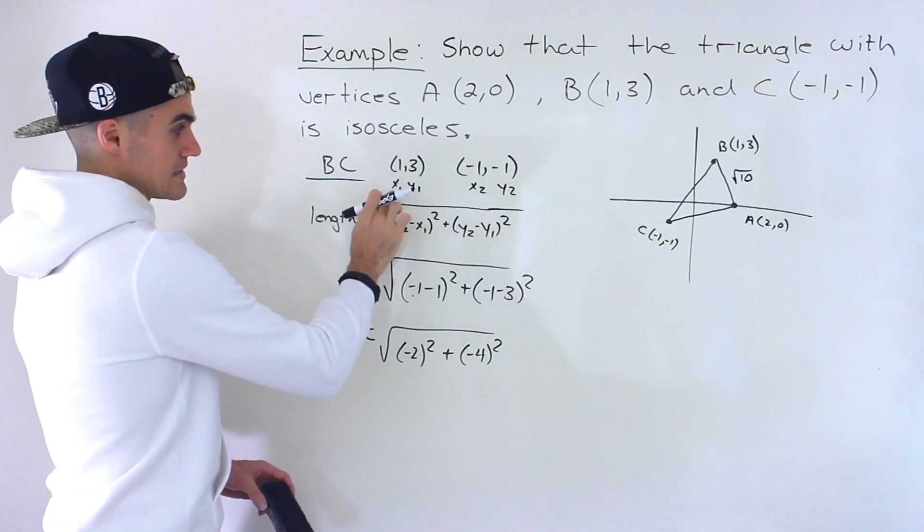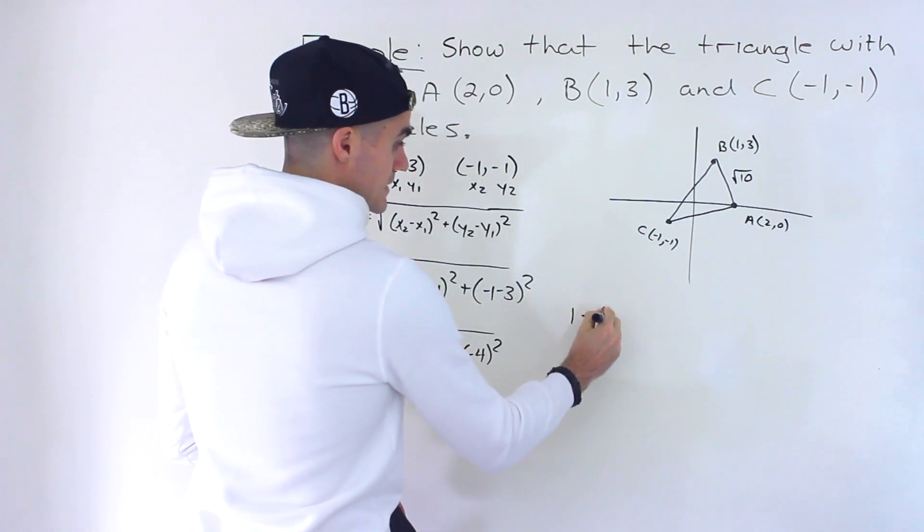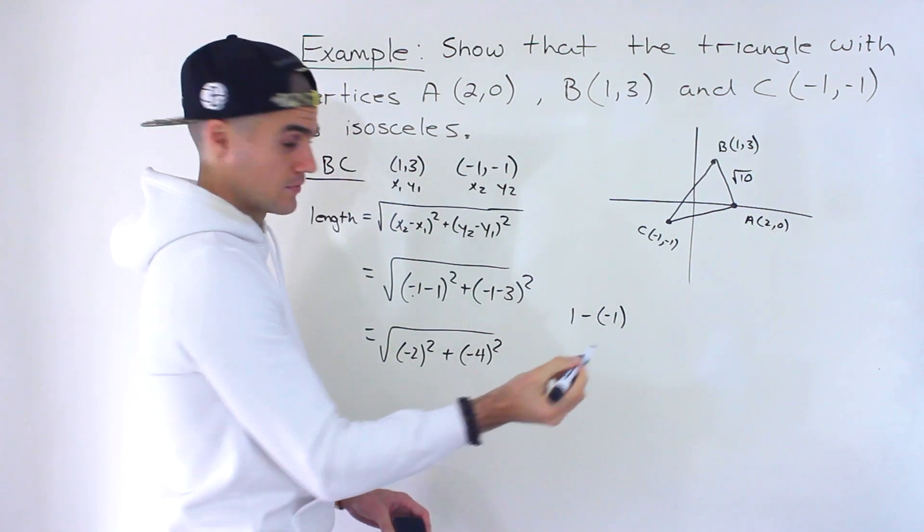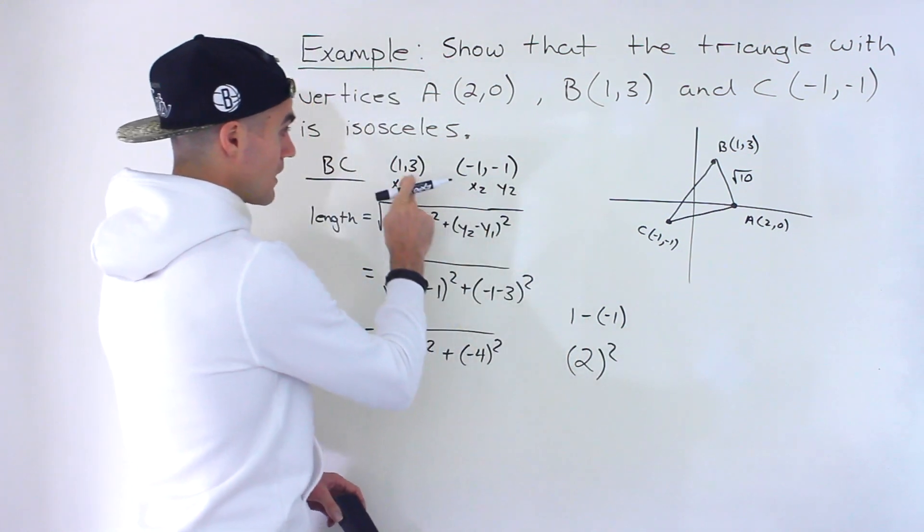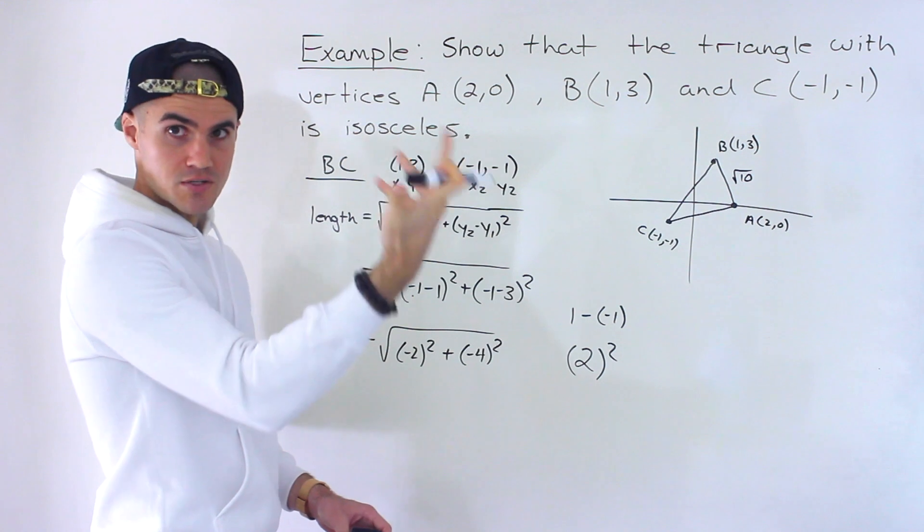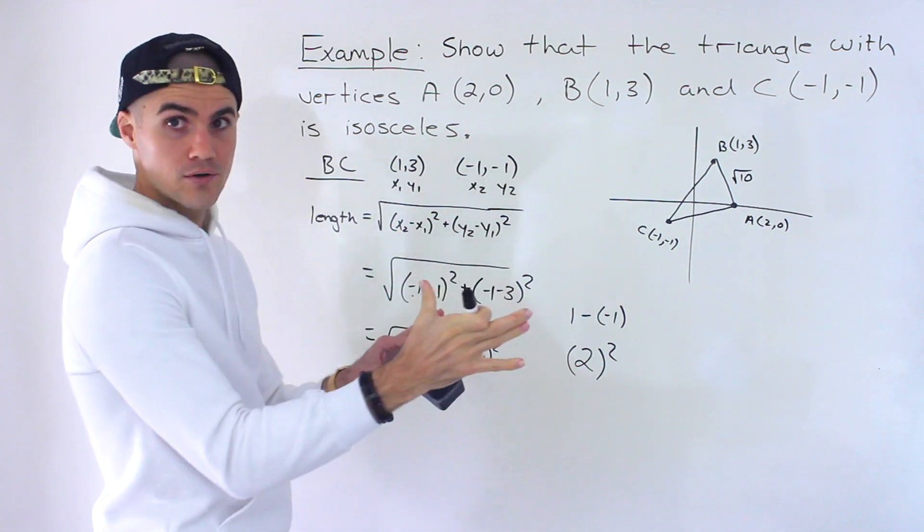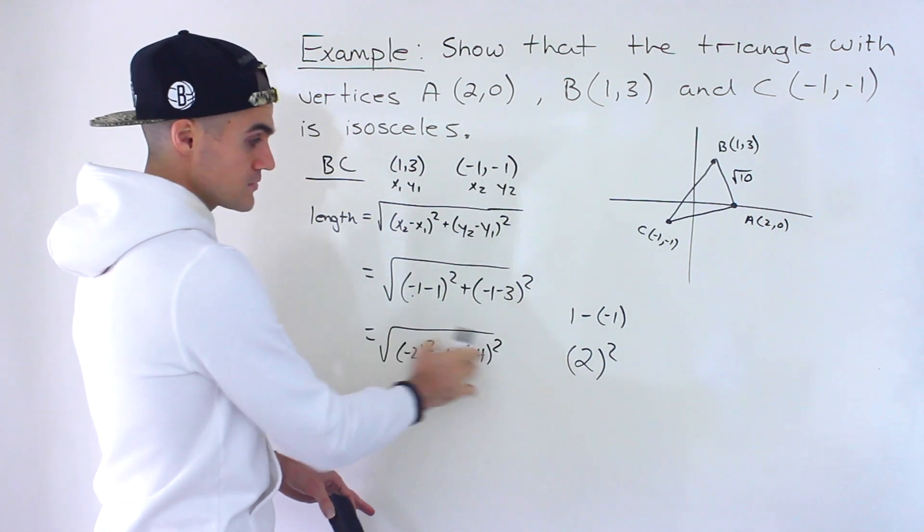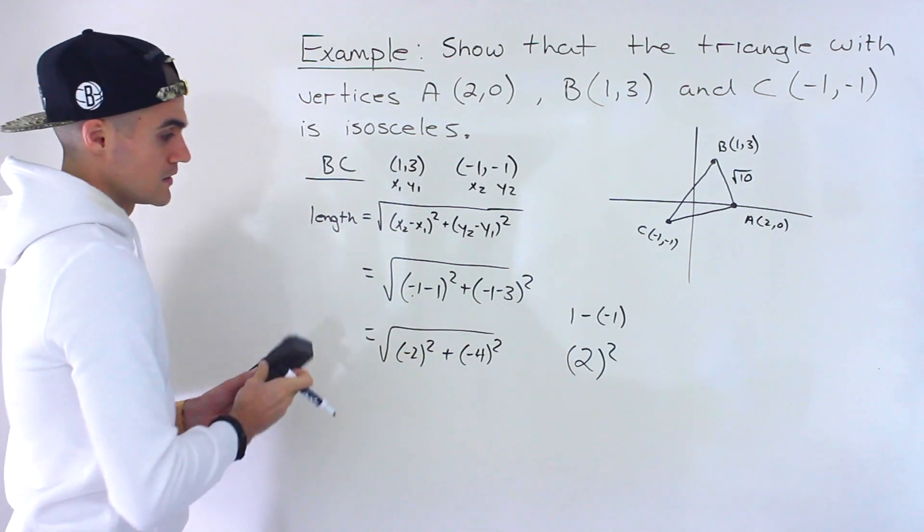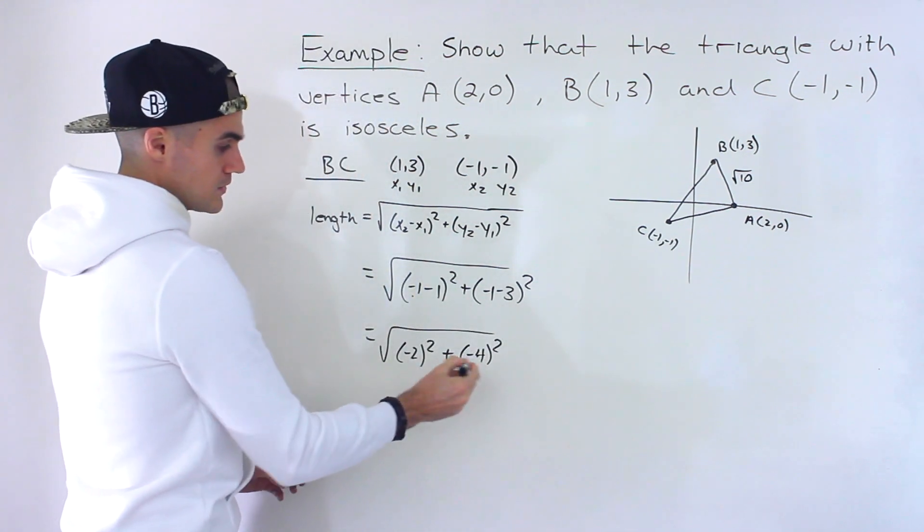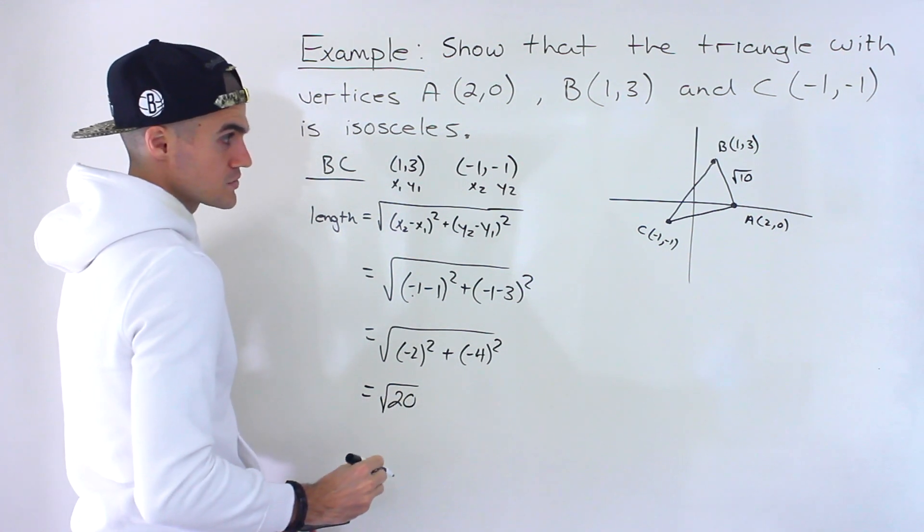Now if you rearrange these and let this be x₂ y₂, this be x₁ y₁, then you'd end up with 1 minus -1, for example, and then that would end up being 1 plus 1, which would give us 2, and that would be squared. And then you'd have 3 minus -1, which would end up being 3 plus 1, which would be 4, and then 4 would be squared. So notice (-4)² or 4² gives us 16, or (-2)² or 2² would give us 4. That's why those answers would still be the same. So whichever way you do it, you end up with 16 plus 4, which would be 20, so that's going to be √20.